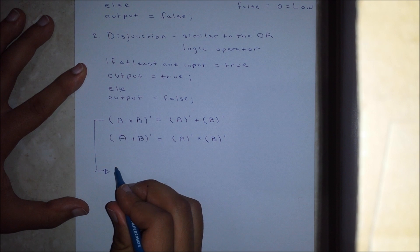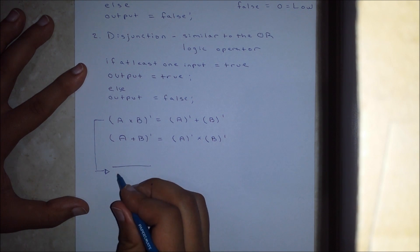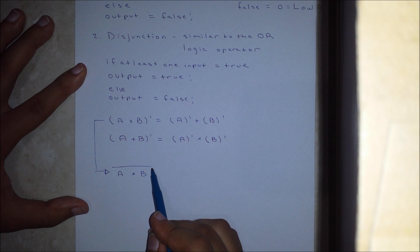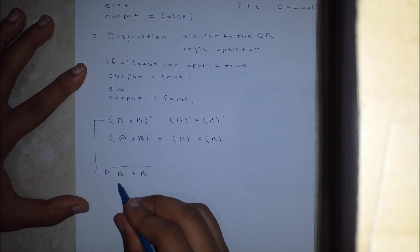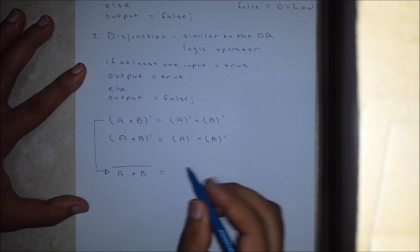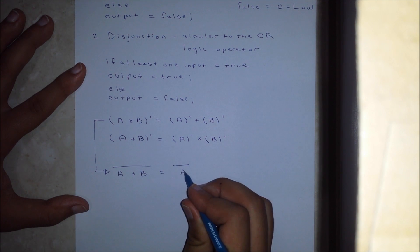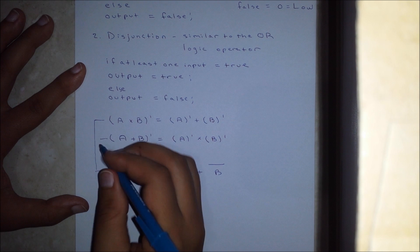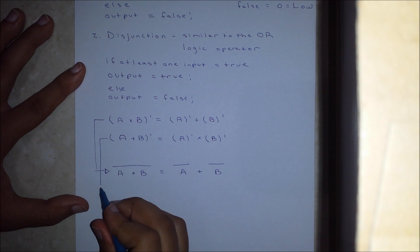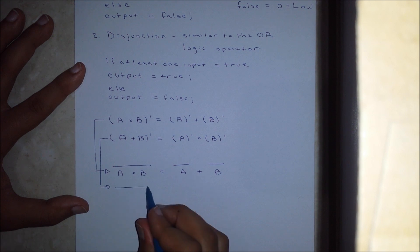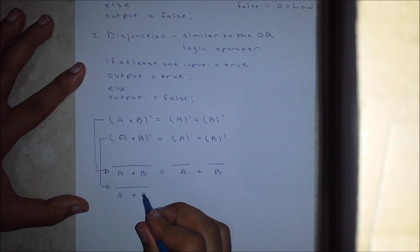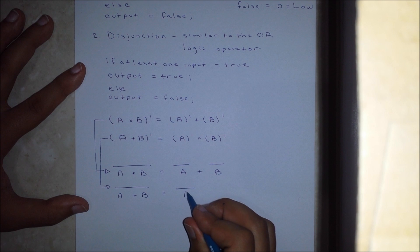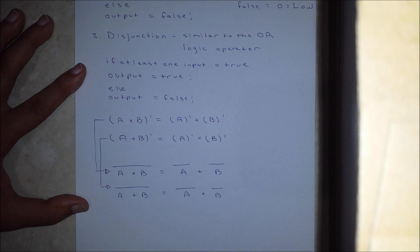The other way you could write this is with a bar above the expression. This reads as follows: the complement of A and B is the De Morgan's equivalent to the complement of A or the complement of B. And likewise, this reads as: the complement of A or B is the De Morgan's equivalent to A and B complemented.